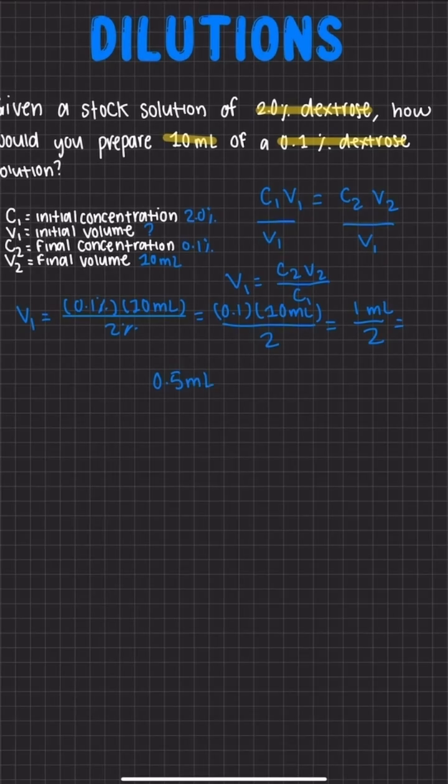So we can read this by saying that we are going to need 0.5 milliliters of 2% dextrose solution. But now we have to solve for the volume of water needed.